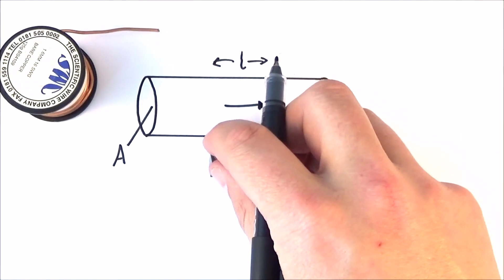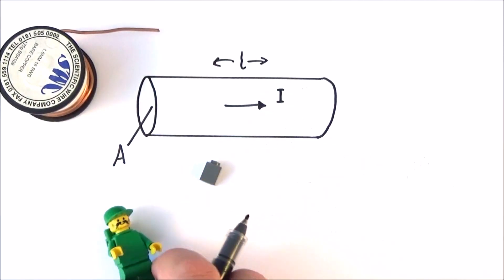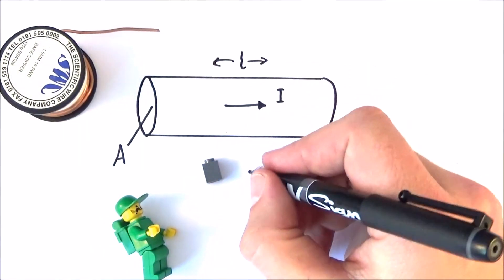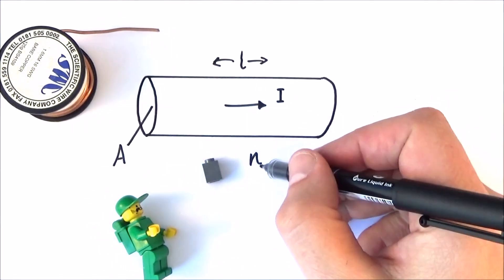So this current is due to the flow of charged carriers. Now I know in one of my previous videos I had these people here where it could just be the electrons. Effectively, there's going to be a certain amount of these charge carriers per unit volume, and I'm going to call this little n.